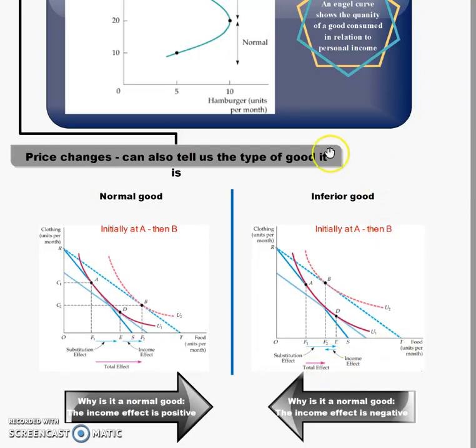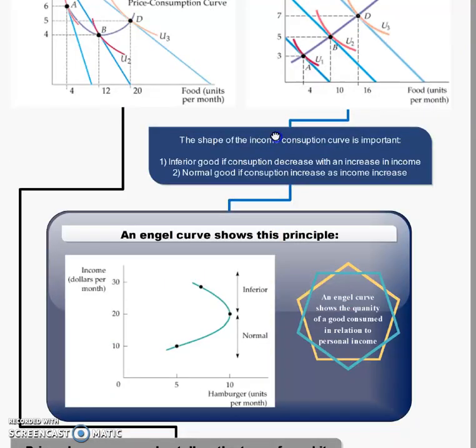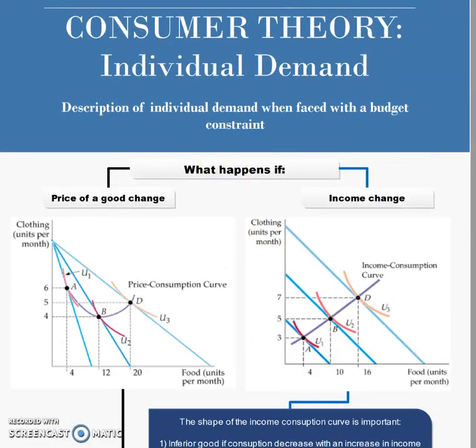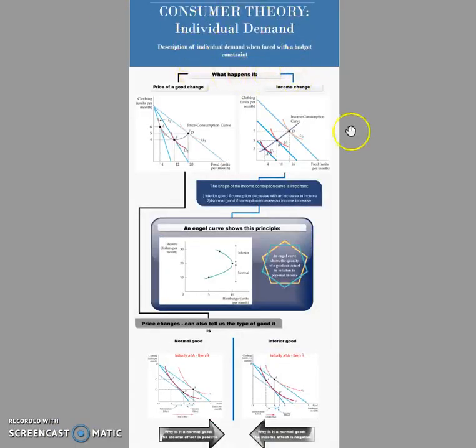So this negative income effect shows you that this is an inferior good. So for a normal good, the income effect will be positive. For an inferior good, the income effect will be negative, slightly negative. So this is just a short summary of consumer theory, specifically looking at individual demand. I try to keep it short and sweet. I hope that you understand. Cheers.